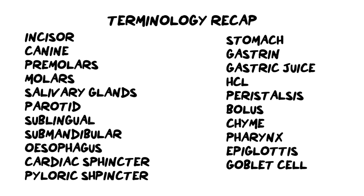As always, I like to finish off my lessons with a terminology recap — remember you can use all of these words on flashcards to make studying quicker. Starting with teeth: incisors, canines, premolars, and molars — please know their functions. We spoke about the salivary glands: the parotid, the sublingual, and the submandibular. We then covered the esophagus, which contracts and relaxes with peristalsis — waves of contraction. At the stomach we have the cardiac sphincter, which keeps food from going back up the esophagus, and the pyloric sphincter, which keeps food in the stomach long enough to digest before moving on to the small intestine.